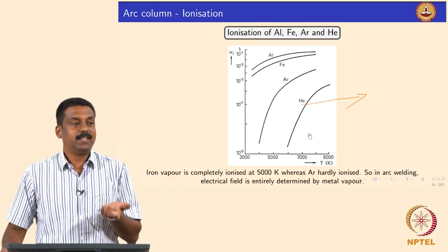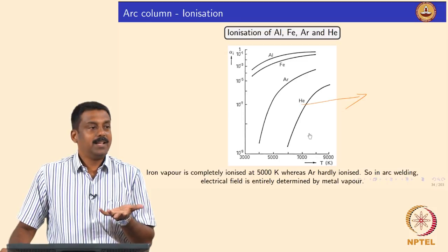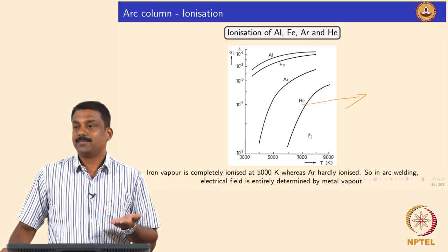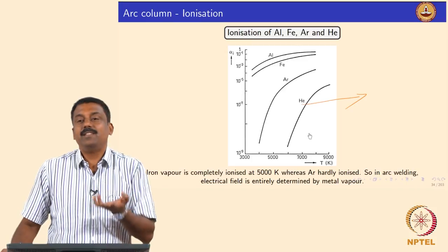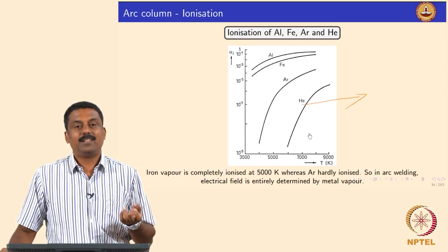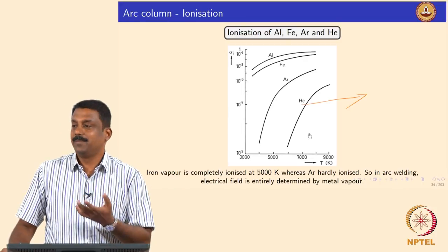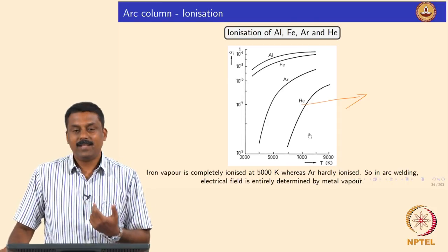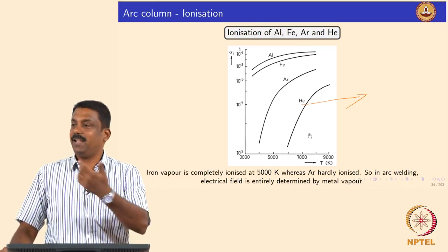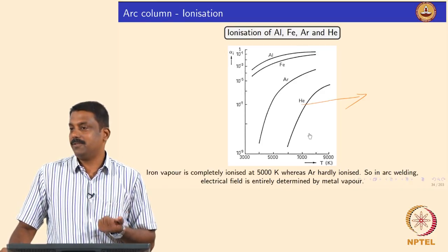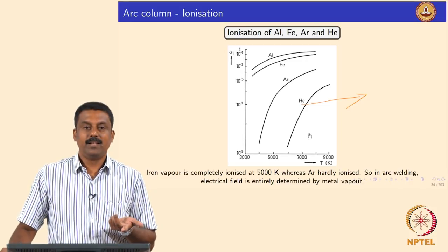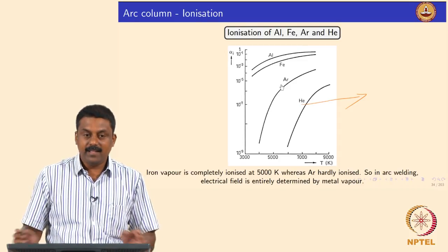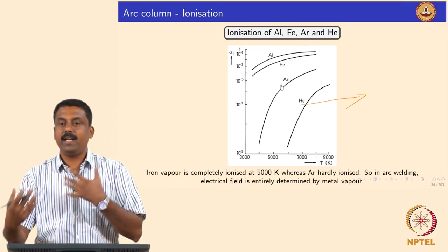The moment you create the metal vapor, the metal vapor would subsequently ionize and carry forward this discharge. For example, aluminum would ionize much more easily at much lower temperature than helium and argon — so aluminum vapor can supply the electrons needed for sustained discharge. So helium and argon shielding are actually used for arc ignition. The moment you ignite the arc, you start vaporizing the metal.